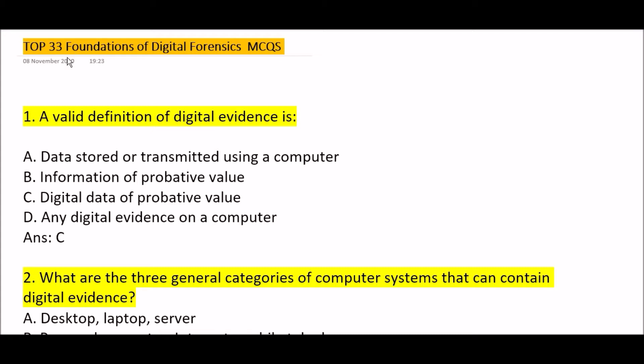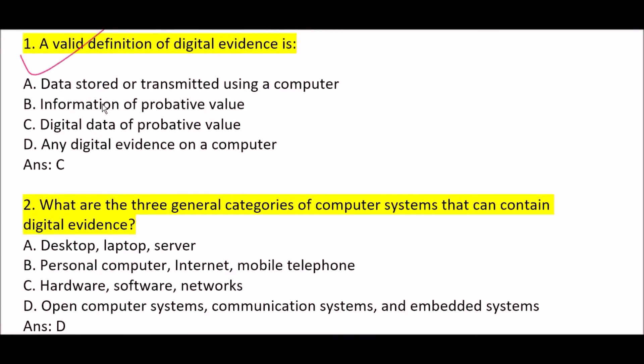First question: a valid definition of digital evidence is — options A, B, C, D are given. Option A: data is stored or transmitted using a computer. Option B: information of probative value. Option C: digital data of probative value. Option D: any digital evidence on a computer. Correct answer is Option C — digital data of probative value.